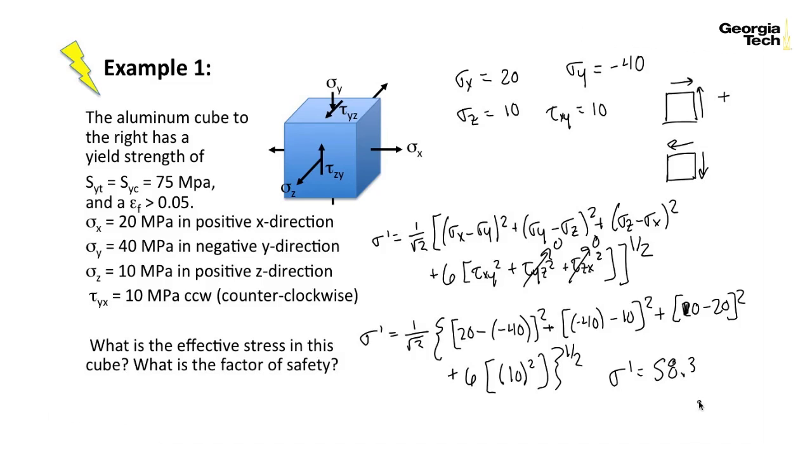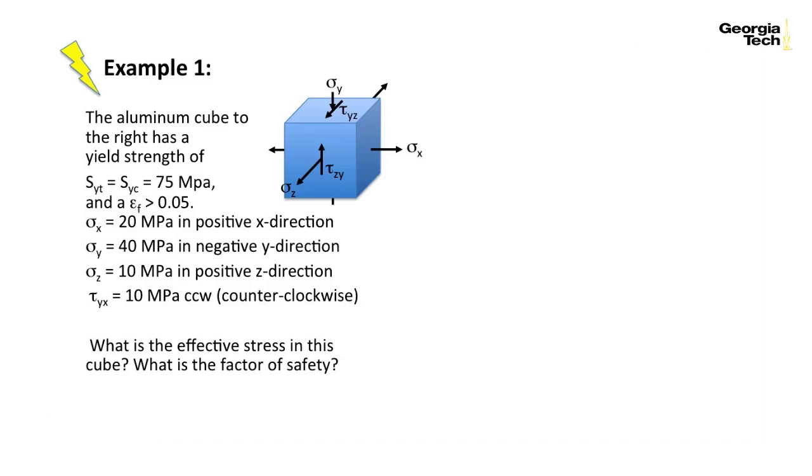The other question here was what is the factor of safety? So here we know that our yield strength in tension is equal to our yield strength in compression. Our factor of safety is going to be the strength, 75 megapascals, divided by your effective stress, which is 58.3 megapascals. So your factor of safety is 1.28, which means that you have not had any yield in this design yet, and so you're operating in a relatively safe environment with this load level and design level.